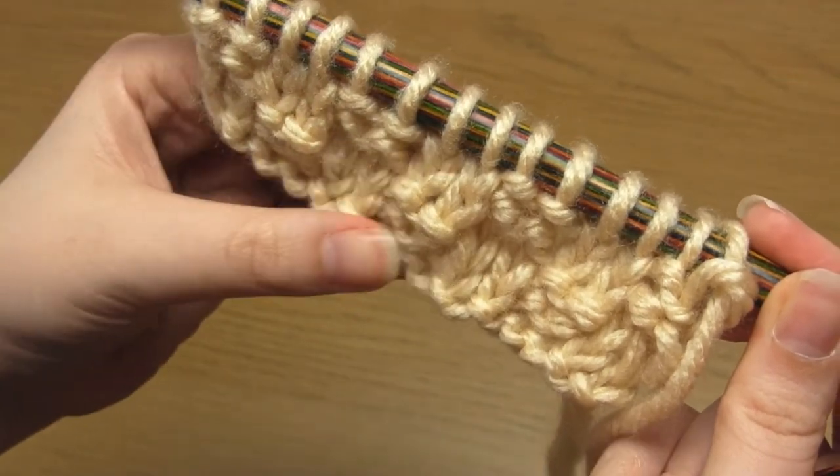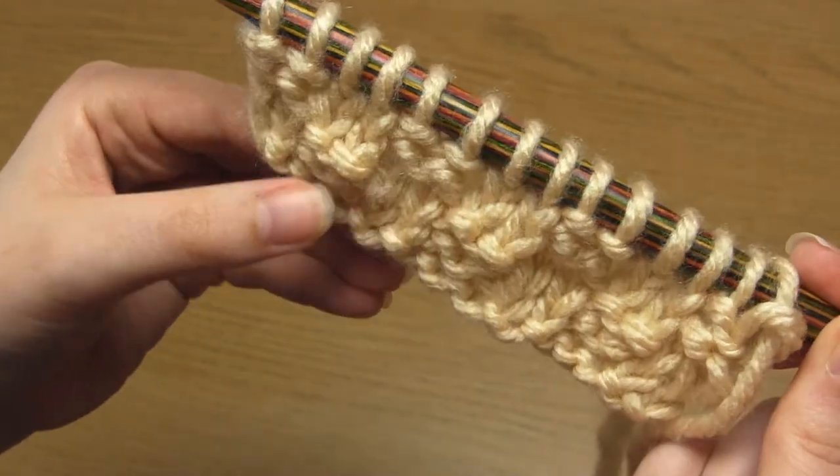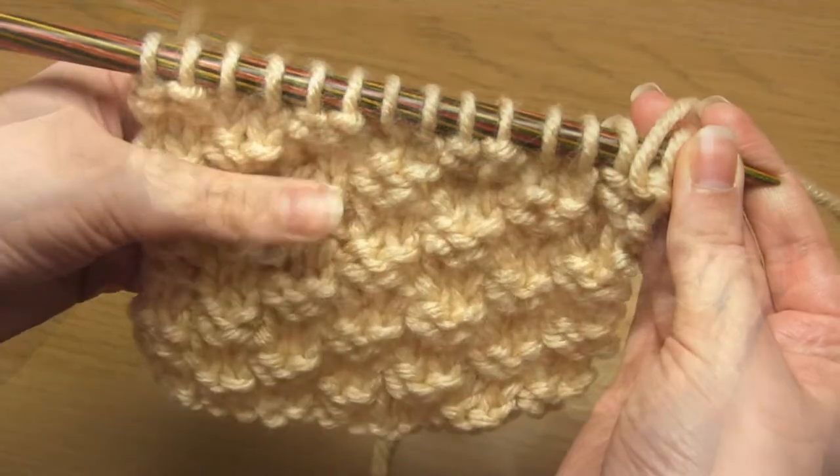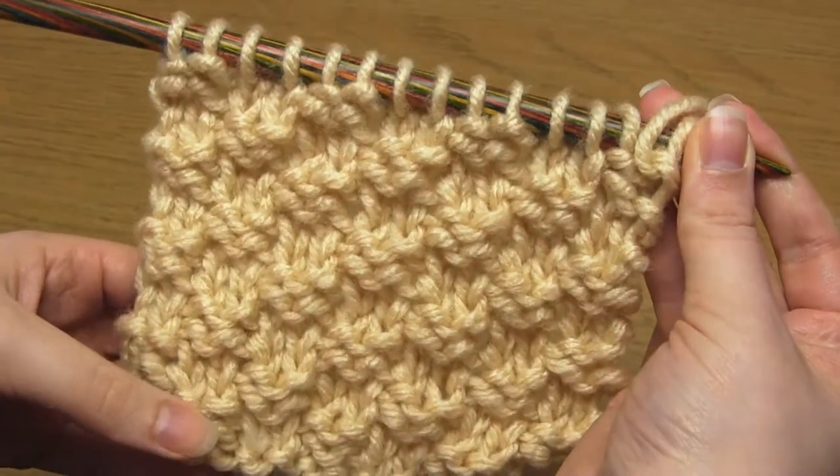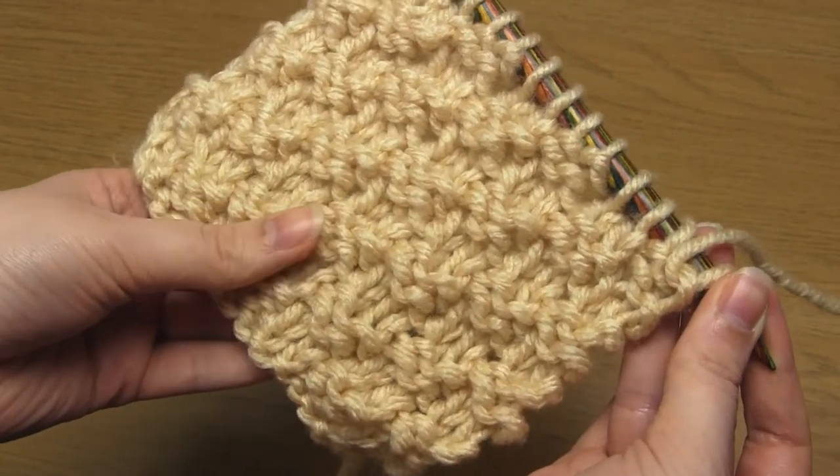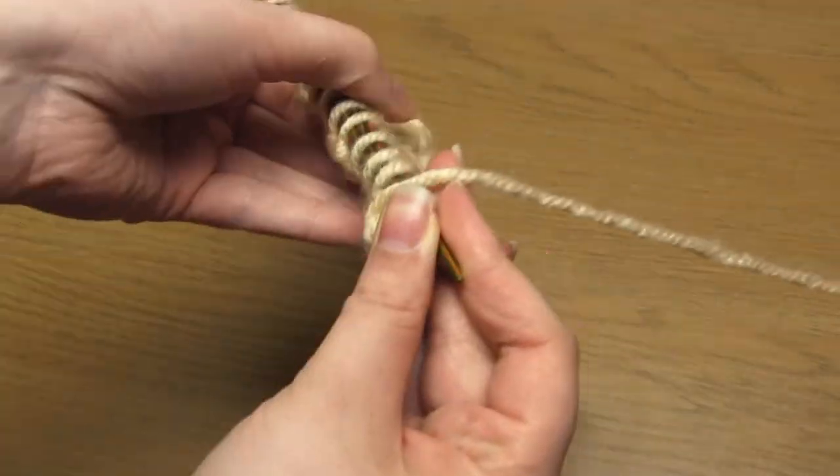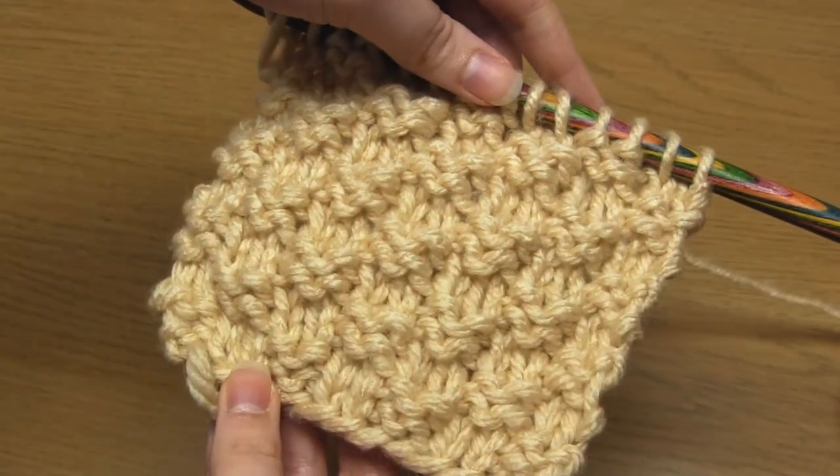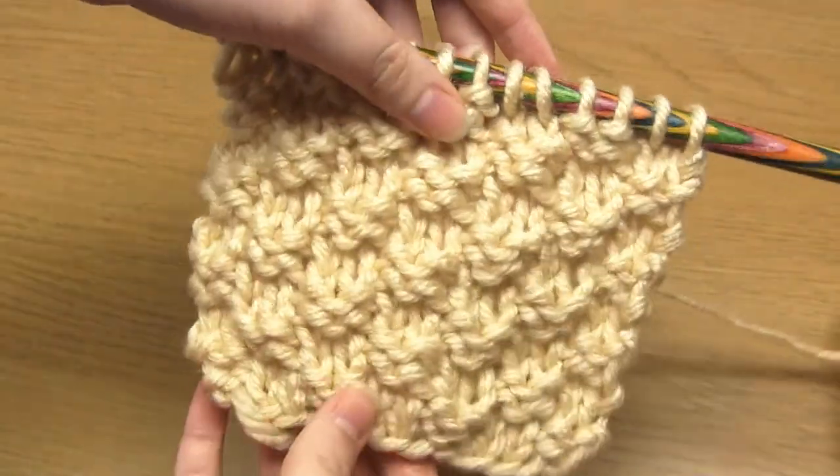All you need to do now is just keep knitting these four rows over and over as many times as you wish. And this should be the result. As you can see, it's a nicely textured pattern and it's also reversible and it lies flat. It doesn't curl up at the edges.